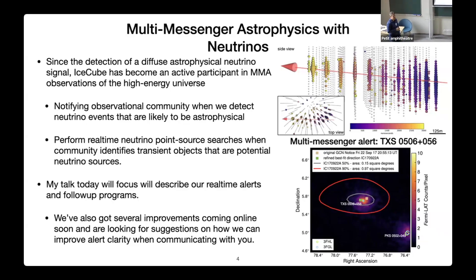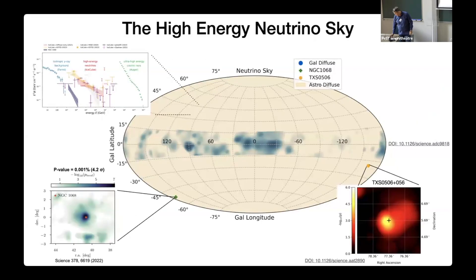We have two ways we engage the community. We notify you guys when we see an interesting astrophysical neutrino. And then we have a collection of neutrino samples that we're collecting all the time. They may not all be astrophysical neutrinos, but they allow us to do a real-time search for interesting excesses when you guys send us alerts. My talk today will really focus on the real-time alerts. We've got several improvements we've been working on over the last few years that are coming online very soon. We're also kind of looking for suggestions and feedback from you guys on how we can improve what we do with our alerts. Is there something you'd like to see from us?